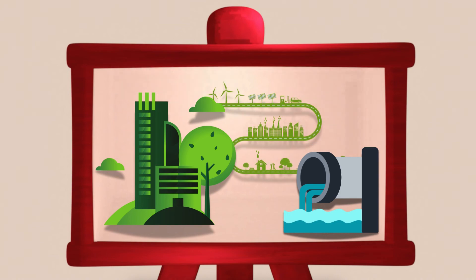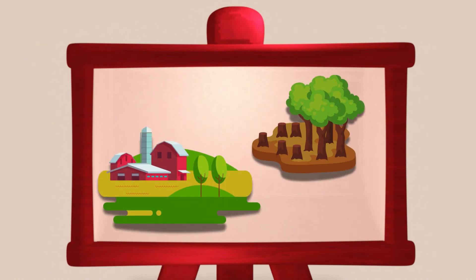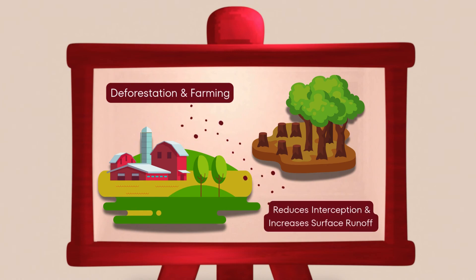Rural areas usually have natural flood defenses, but deforestation and farming can reduce interception and increase surface runoff, speeding up the water.